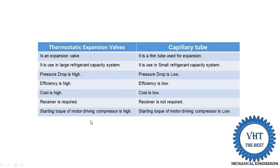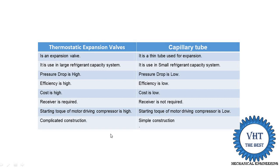The next difference is that the starting torque for the motor driving the compressor is high when using the expansion valve, because the pressure drop is high. With the capillary tube the pressure drop is low, so the starting torque of the motor driving the compressor is also low.